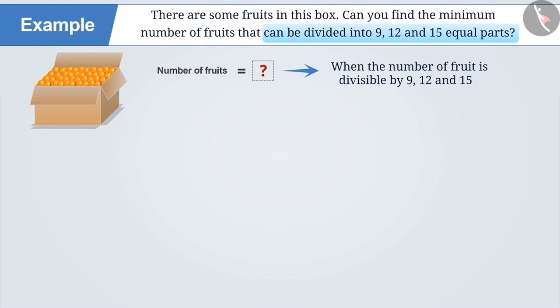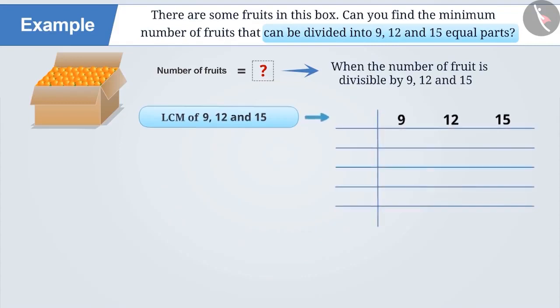In order to find the minimum number of such fruits, we need to find the LCM of 9, 12 and 15. To do this, we will write these numbers as follows. Now we will find the smallest prime number which will divide at least one of them, that is 2.